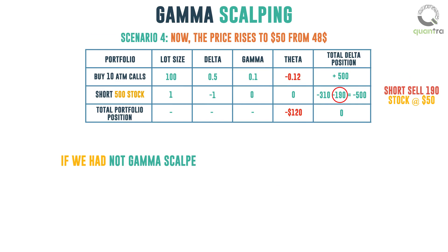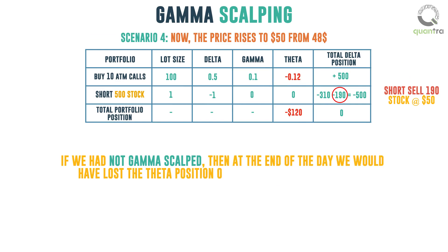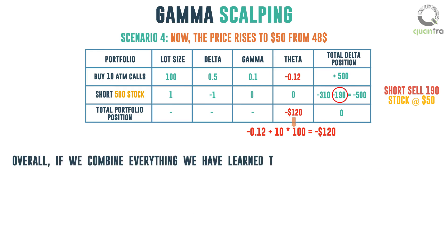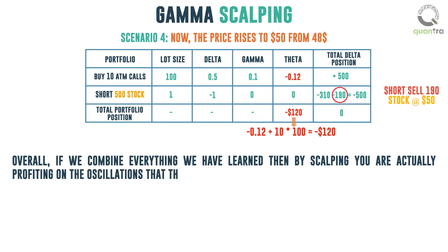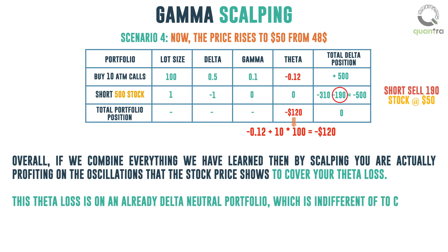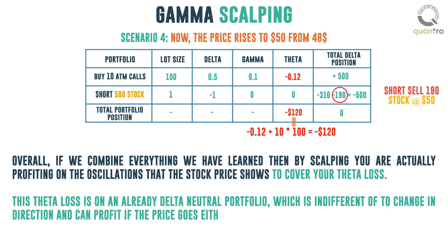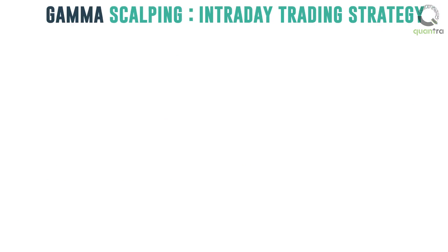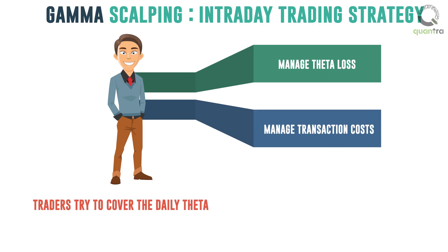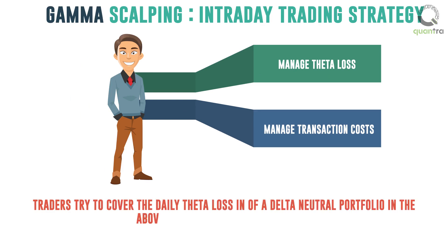If we had not Gamma scalped, then at the end of the day we would have lost the Theta position of our portfolio, which is minus 0.12, multiplied by the 10 ATM calls bought of lot size 100 — a loss of $120. Overall, by scalping you are actually profiting on the oscillations that the stock price shows, to cover your Theta loss. This Theta loss is on an already Delta-neutral portfolio, which is indifferent to change in direction and can profit if the price goes either way. This is mainly an intraday trading strategy done by professional traders, as Theta loss and transaction costs both have to be managed. Traders try to cover the daily Theta loss of a Delta-neutral portfolio by scalping.